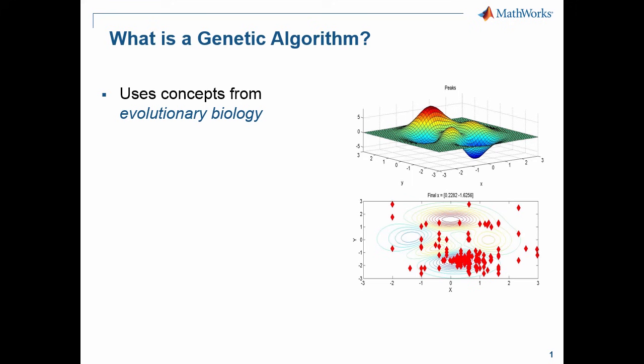Genetic algorithms are an optimization technique used to solve non-linear or non-differentiable optimization problems. They use concepts from evolutionary biology to search for a global minimum to an optimization problem. The name genetic algorithm comes from the fact that they're mimicking evolutionary biology techniques.